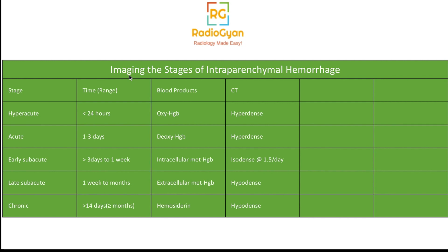Now let's get into MRI, where it gets a bit more complex. In the initial hyperacute stage, hemoglobin is in oxyhemoglobin form. Oxyhemoglobin is just like any other hemoglobin in the body, so it doesn't significantly affect T1 or T2 appearance. The appearance mainly depends on water content. On T1, it is iso-intense; on T2, because the water content is high in the hyperacute stage, it appears hyperintense.